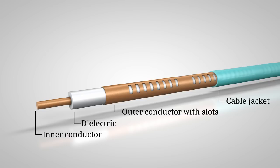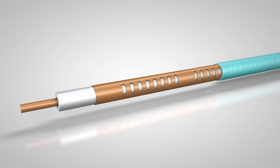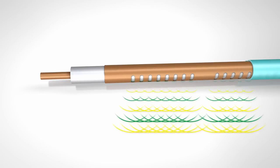The radio waves are radiated through small slots in the outer conductors, forming a spatially limited radio link. The clearly defined radio link minimizes interference with other signals.